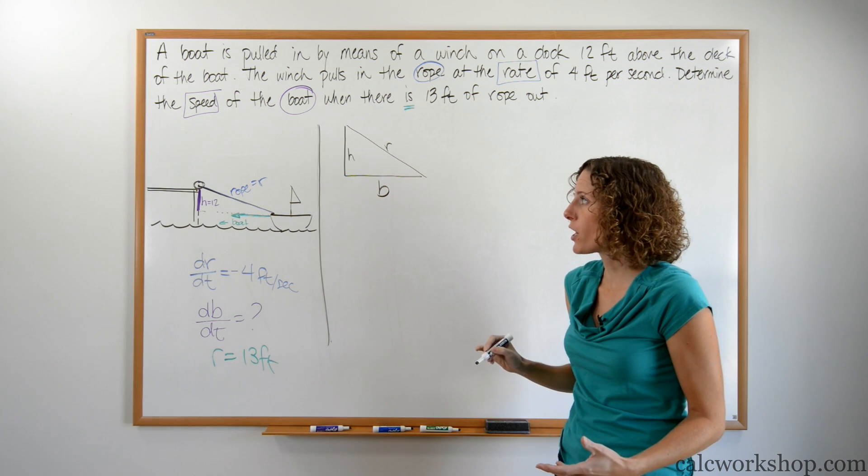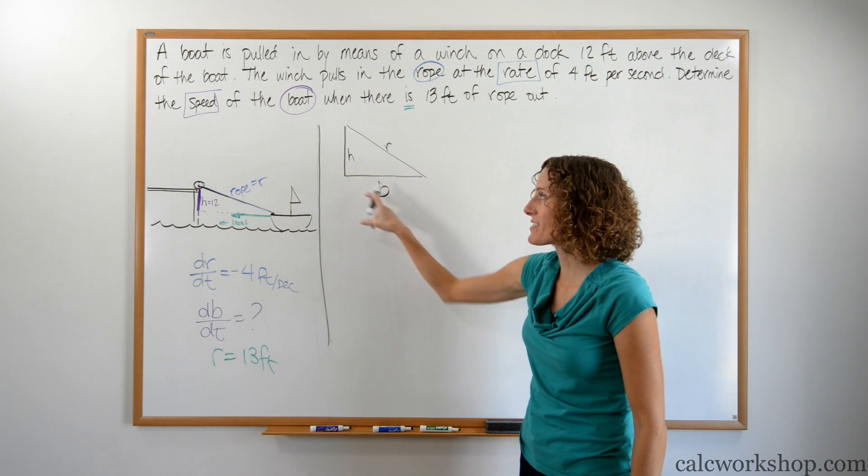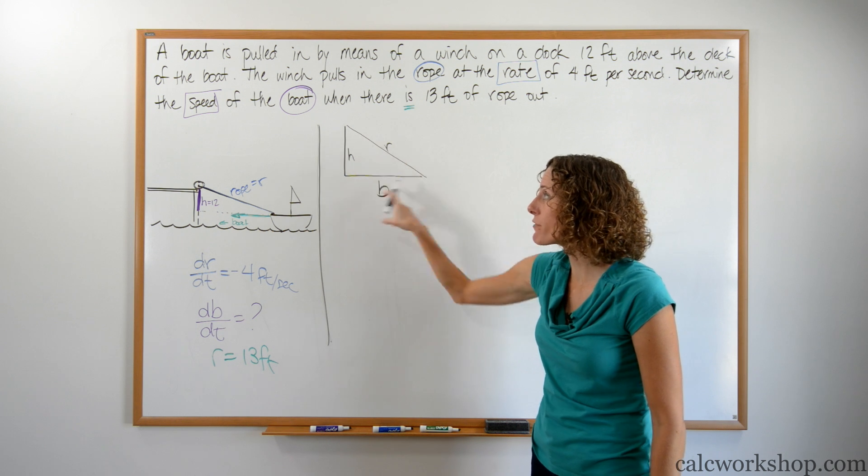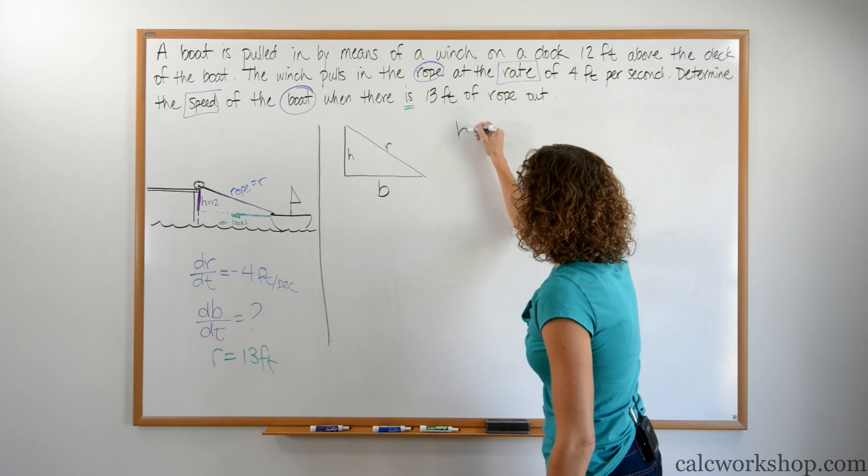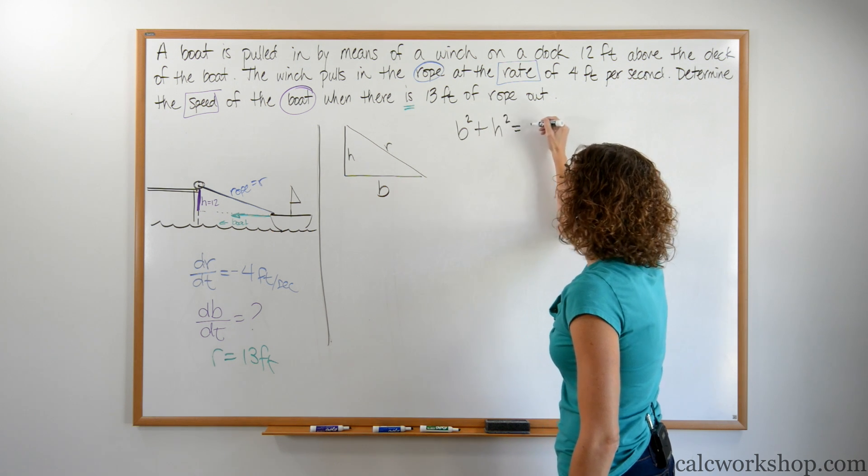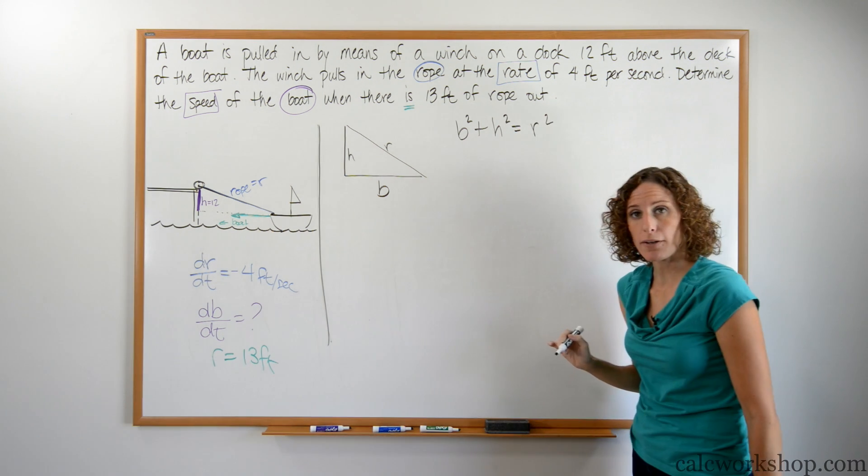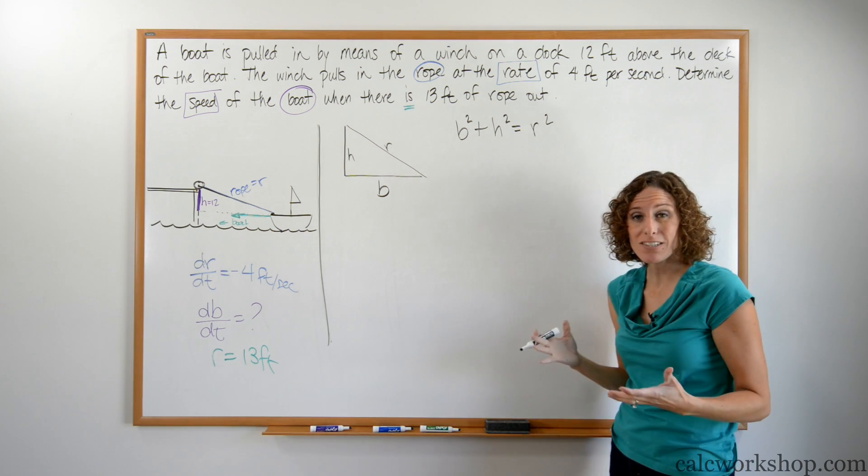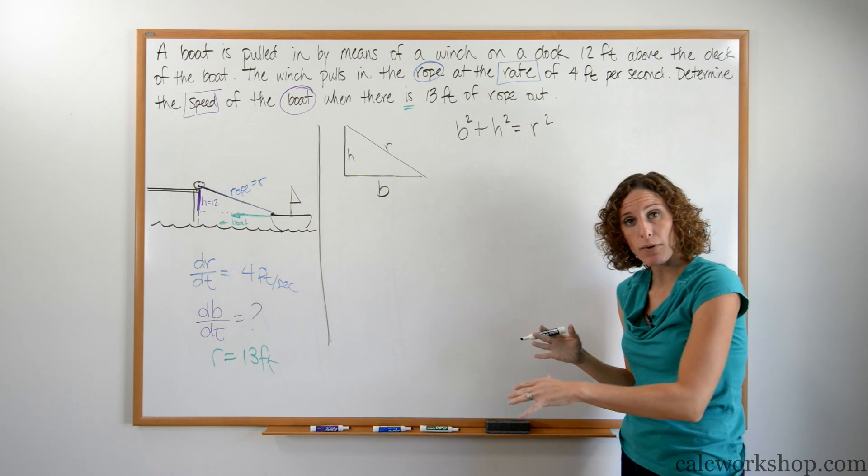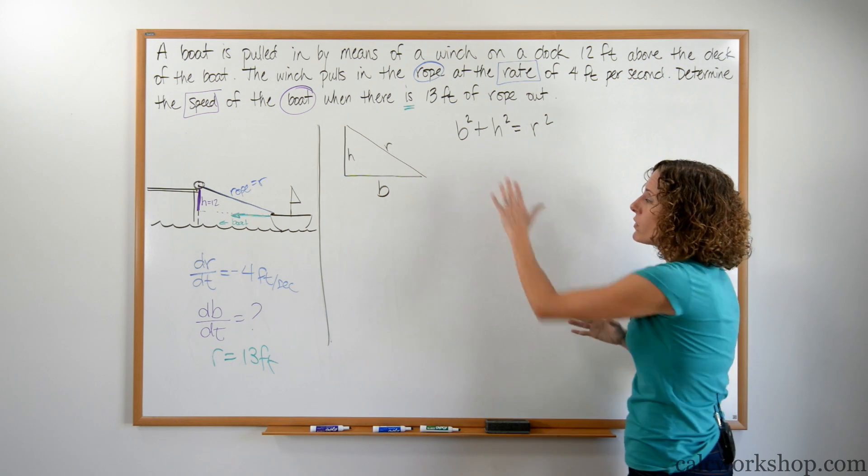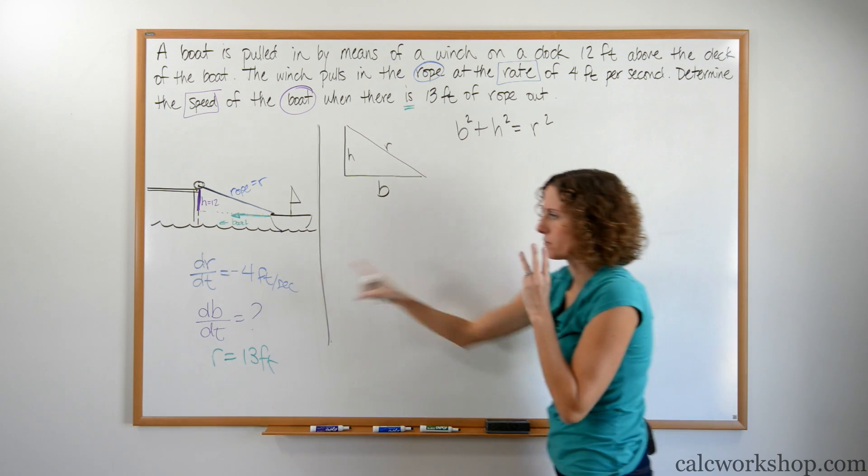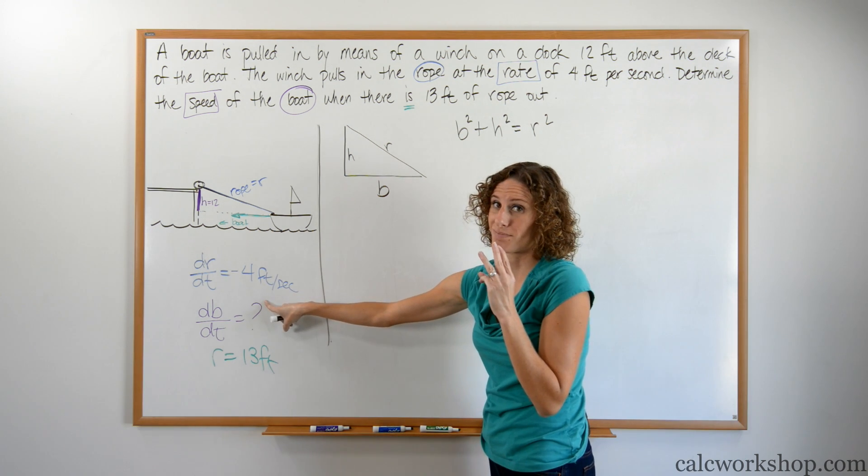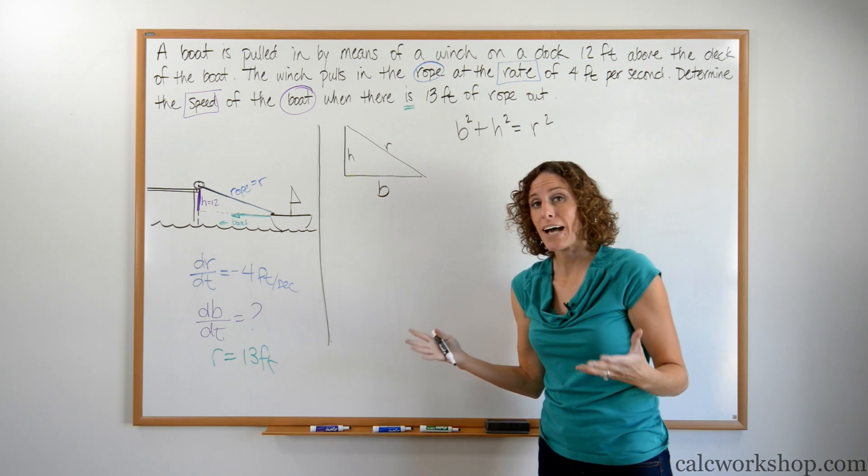What do we know? If we're looking at side lengths, we can relate everything in this triangle to Pythagorean theorem. We can say that B squared plus H squared equals R squared. Just like the one when we had the plane flying over the radar tracking station. Let's count. One, two, three. Three variables. How many rates? One. That's a problem. Can't do it. But what did we learn last time? There was somebody in the problem that was constant.